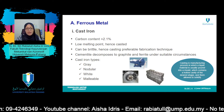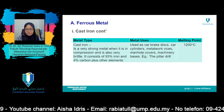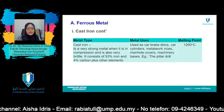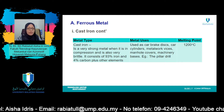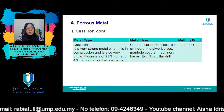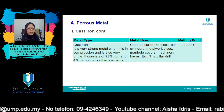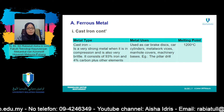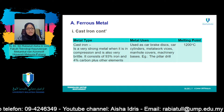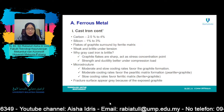Cementite is a metastable compound and under certain circumstances it can be made to decompose to form alpha ferrite and graphite. The tendency to form graphite is regulated by composition and rate of cooling. Graphite formation is promoted by the presence of silicon in concentrations greater than 1 weight percent. Slower cooling rates during solidification also favor graphitization, or the formation of graphite.